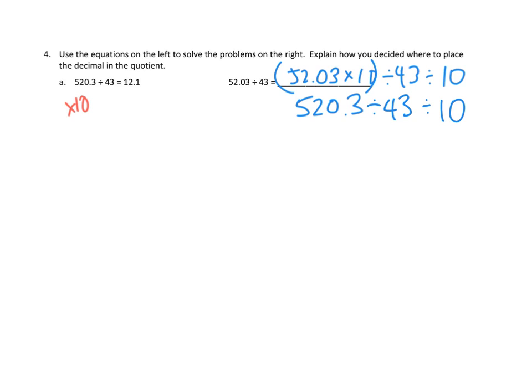Now I'm noticing that this part right here is exactly what this is. 520.3 divided by 43, that's exactly what this is. So I'm going to group this together. Again, we have the commutative power of multiplication and division. And we can go ahead and group those two. So now we actually know what that value is. That value is 12.1. So I'm just going to say, well, that's 12.1. All I need to do now is divide it by 10.